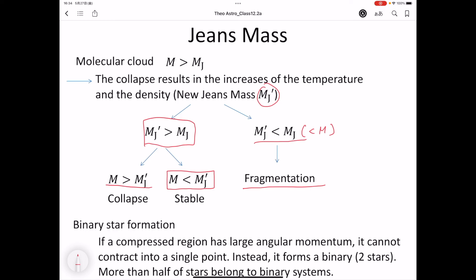By looking at the temperature and number density of compressed regions, we can calculate a Jeans mass. If a compressed region has a large angular momentum, it cannot contract into a single point. Instead, it forms a binary, two-star system where two stars rotate around the center of mass of the system. In fact, more than half of stars belong to binary systems. So, depending on the initial angular momentum, the final state of a star is determined. In this section, I explained the formation process of stars. This is the end of this lecture.